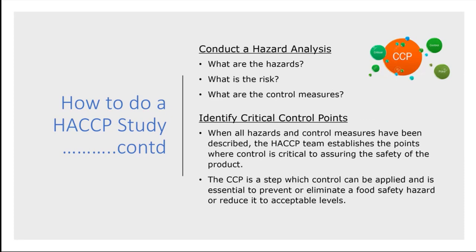We want to first of all do a hazard analysis — so what are the hazards? Looking at our process flow diagram, it's good to do this with a multitude of people as part of the HACCP team. We identify what the hazards are across the full process flow diagram and then drill down to look at where the areas of risk are associated with those hazards, and what control measures we currently have in place that we know are working.